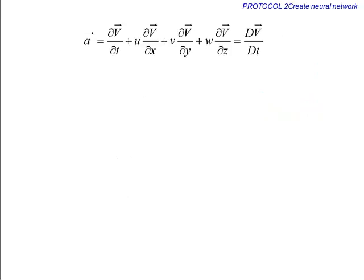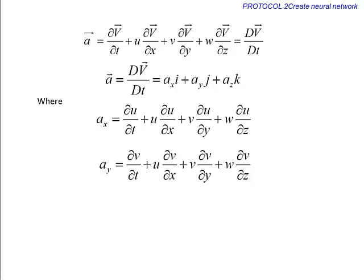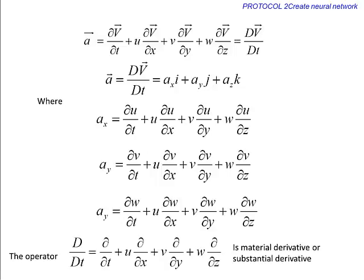The acceleration field vector has three components: ax, ay, and az. The operator d by dt is called material derivative or substantial derivative.